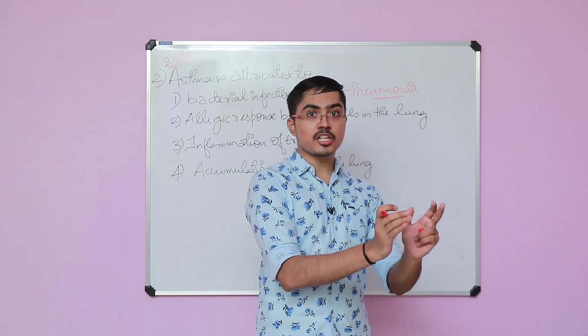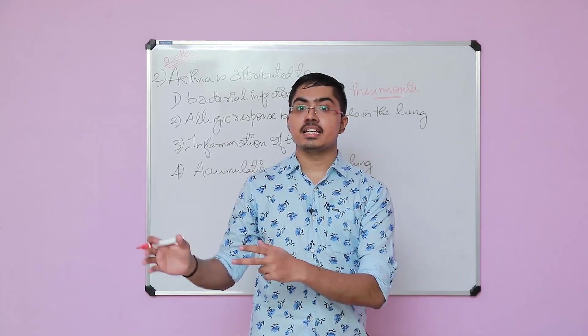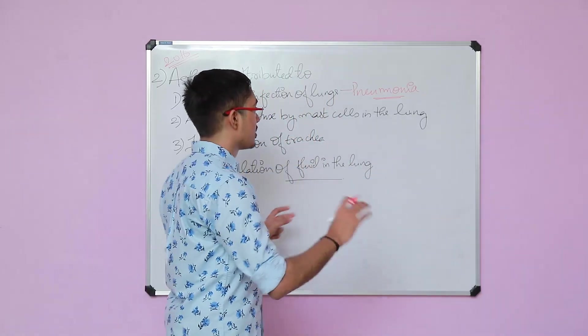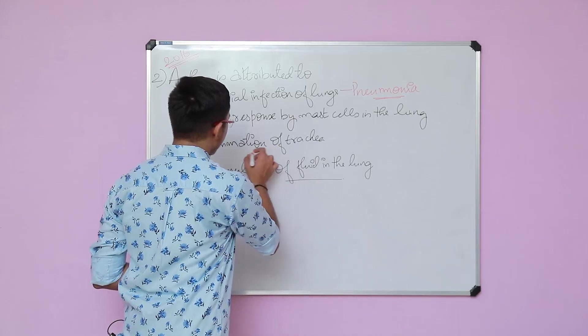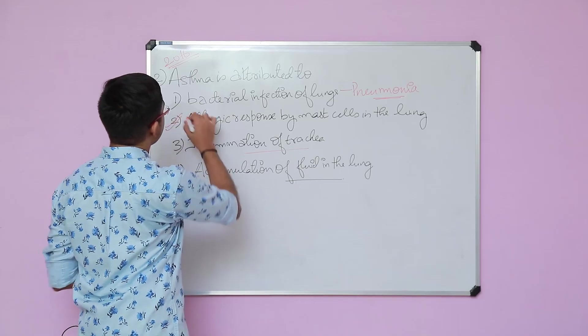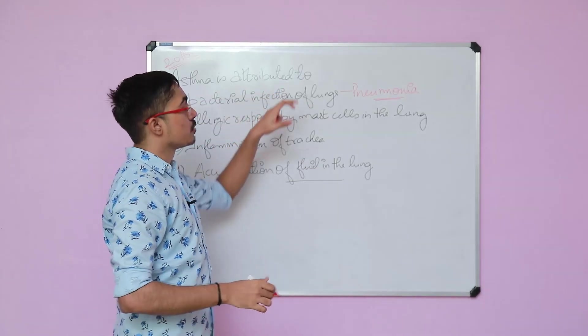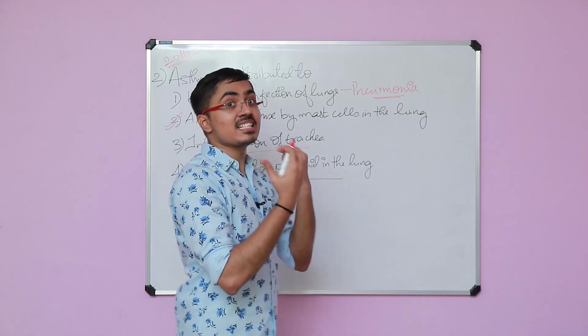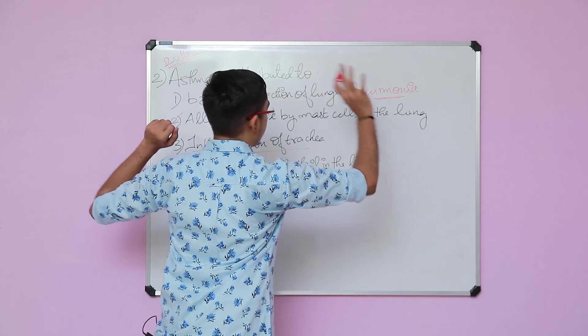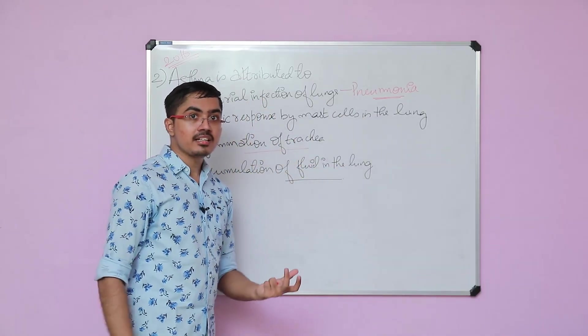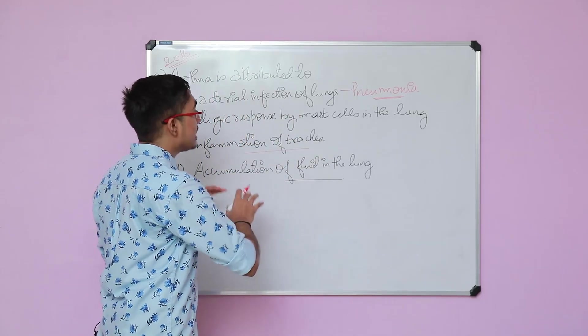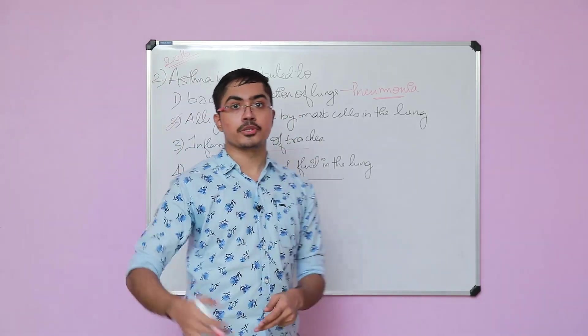Why? Because we discussed the concept of allergy. We said that the cells contributing are mast cells. The antibody is IgE. All these things play a major role. It will secrete histamine and that can cause problems in the airway. Inflammation of trachea may also be a correct option. But I will be choosing this option because they asked what asthma is attributed to or what is the basic mechanism of asthma. Why is this happening?